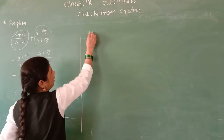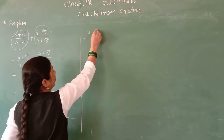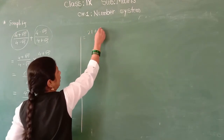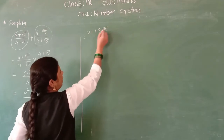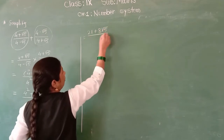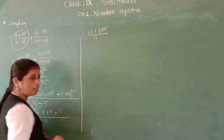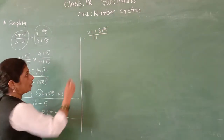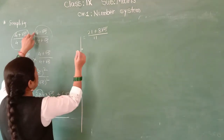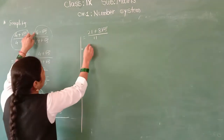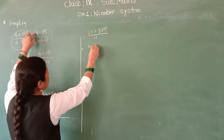So finally you will get: 16 plus 5 is 21, plus 8 root 5, upon 11. So you get 21 plus 8 root 5 upon 11.